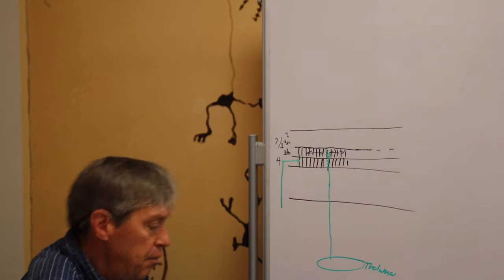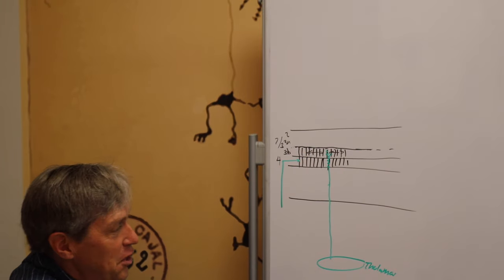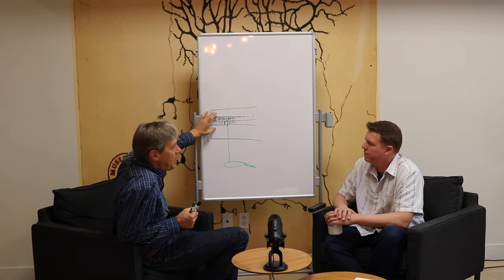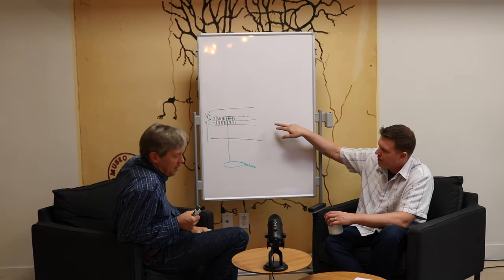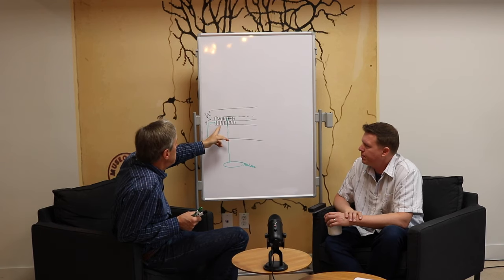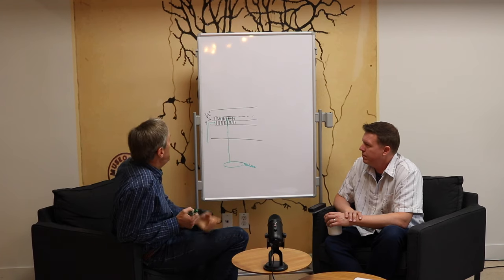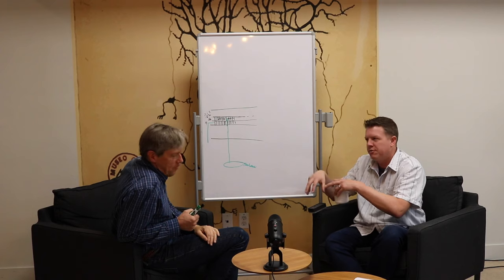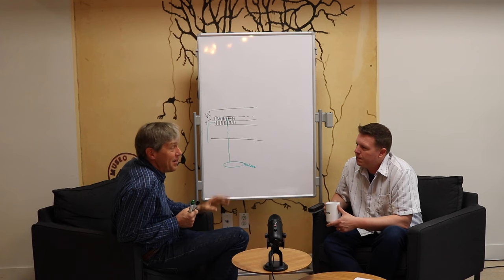When a slice of cortex gets input from sensory organs and the input changes, it tries to model it both ways — it could be changing because you're moving, because the world is moving, or a combination. It's really just one thing: the same mini-columns and spatial pooler, where some cells have an extra input and some don't. It's the same algorithm, just one has a different input. These two processes have to operate cooperatively.